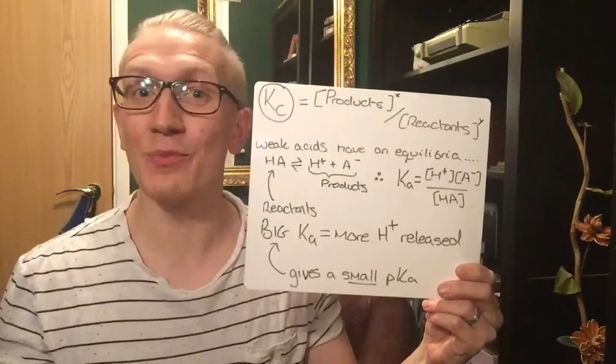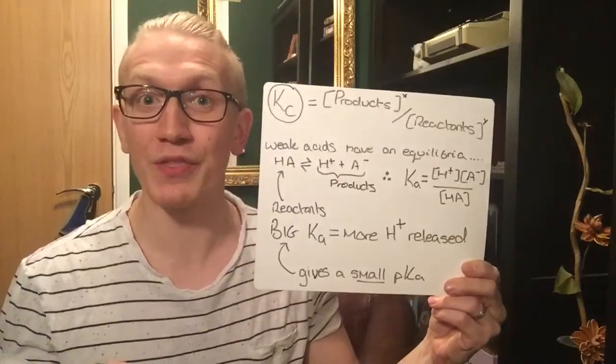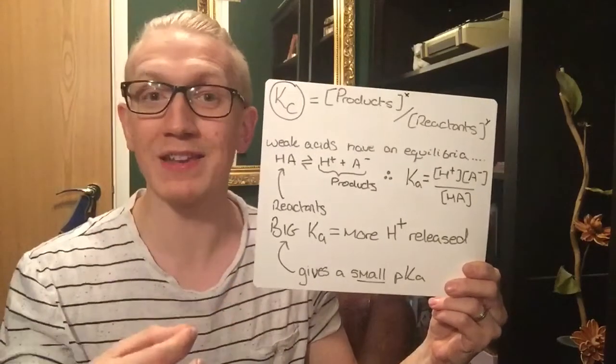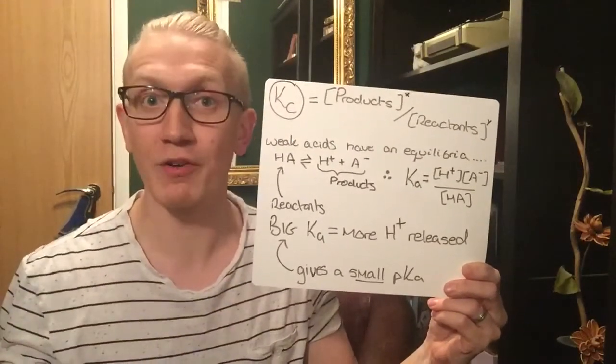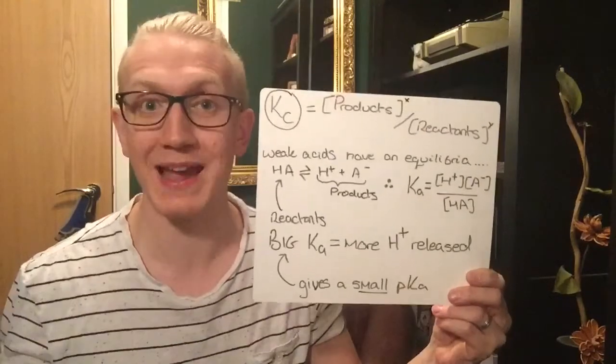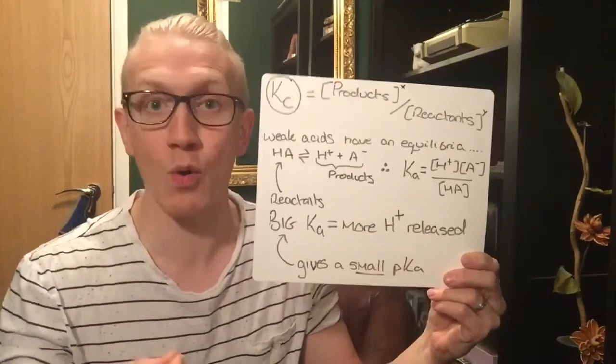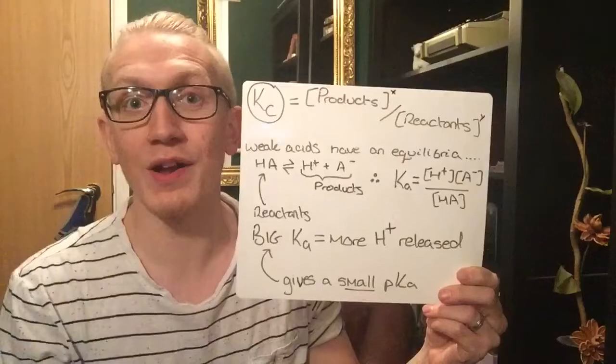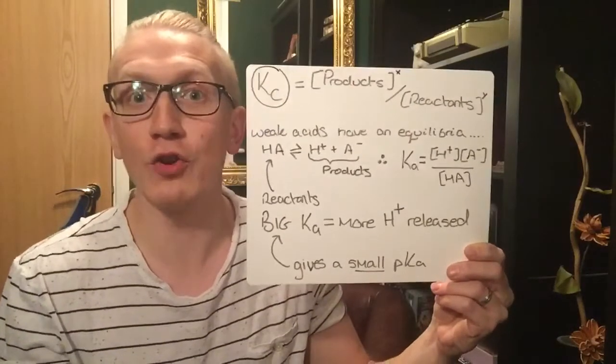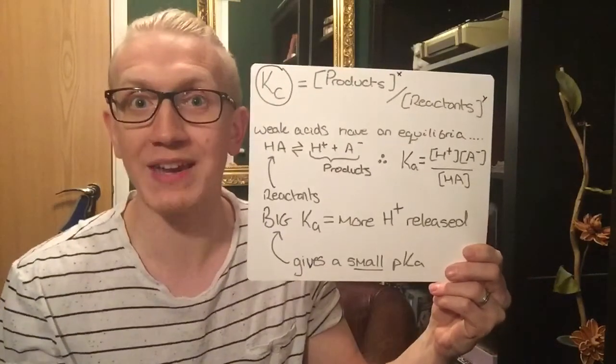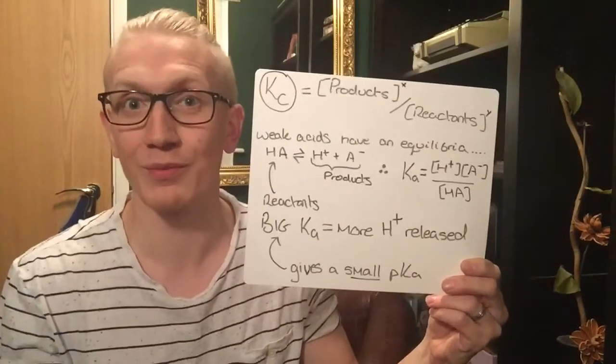Now the X and Y refer to the powers of. That means we take the coefficients from any of the products or any of the reactants and make them the power of that term. So if I used for instance two moles of HNO3, I would put the HNO3 to the power of two.